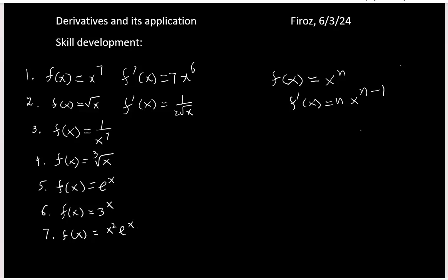Next, you have f(x) is x to the negative 7, which can be written as 1 over x to the 7. So then f prime x will be negative 7 x to the negative 7 minus 1, that means negative 7 x to the negative 8.